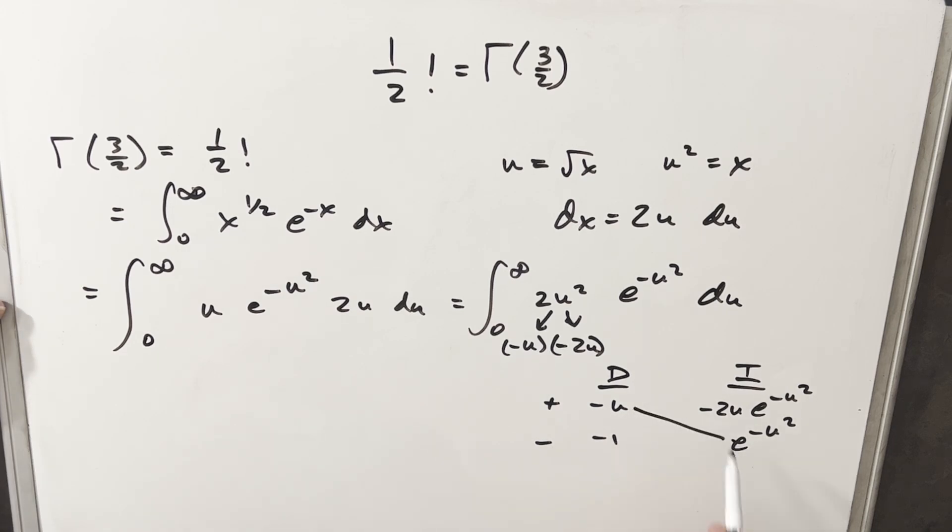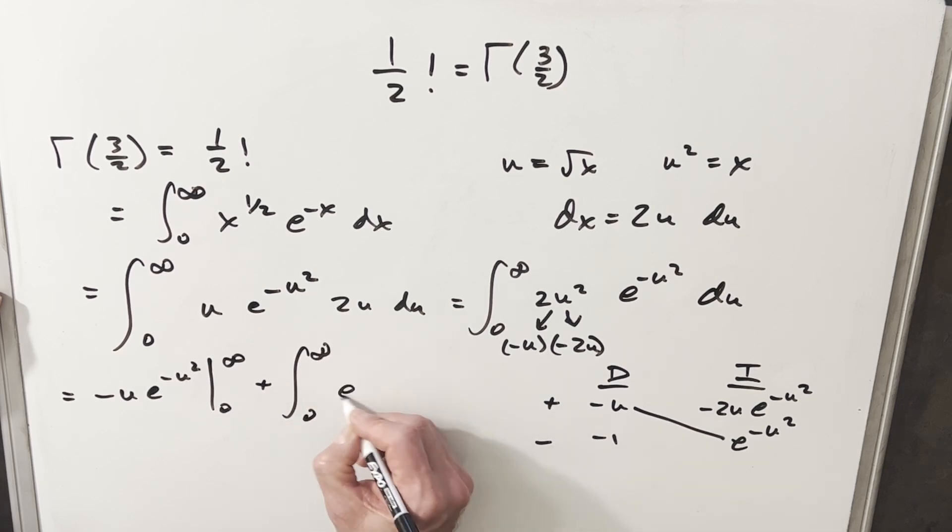And then part of our solution is going to be on the diagonal here. So let's just write that out. We're going to have minus u e to the minus u squared evaluated from 0 to infinity. Here, minus times minus, that's going to cancel and give us a plus. And then we're going to have an integral from 0 to infinity of e to the minus u squared.